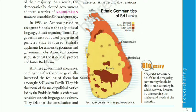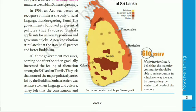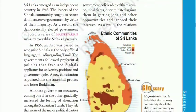All these government measures gradually increased the feeling of alienation among the Sri Lankan Tamils. They felt alienated, separated, and segregated. They felt that none of the major political parties, led by Buddhist and Sinhala leaders, were sensitive to their language and culture. They felt very biased and discriminated against on the basis of their religion, language, and culture.